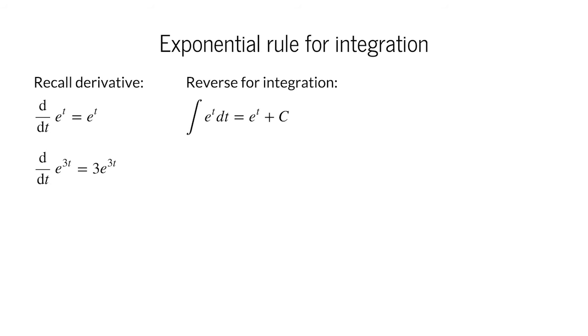Do you remember how to differentiate e to the power of 3t? The factor 3 just comes down to multiply the exponential. Therefore, if we are integrating 3 times e to the 3t, the result is e to the 3t, plus a constant. We can use any constant, k, instead of 3, and the result holds. The integral of k times e to the kt is the function e to the kt, plus a constant.